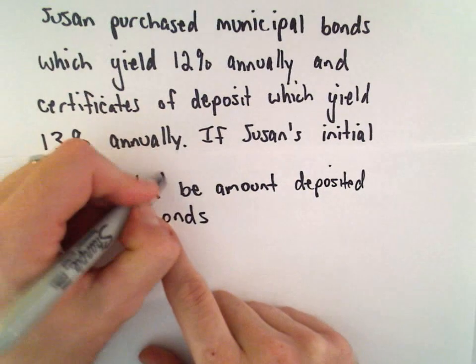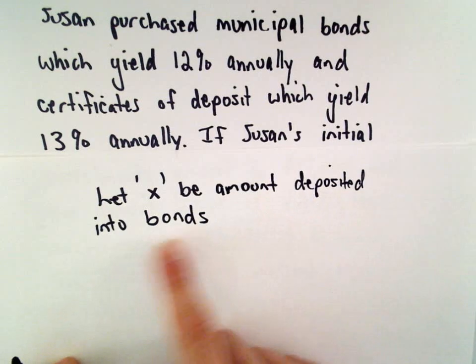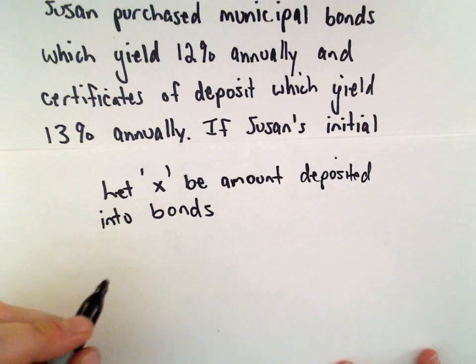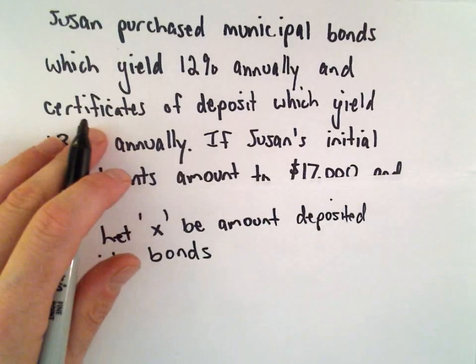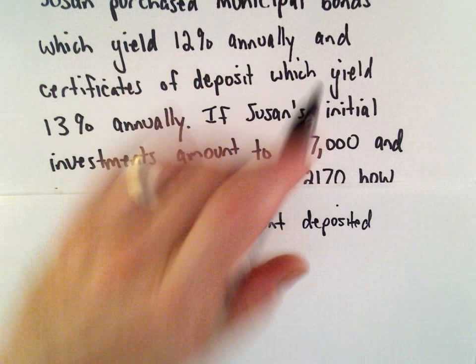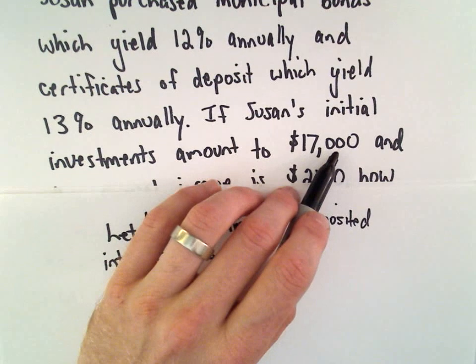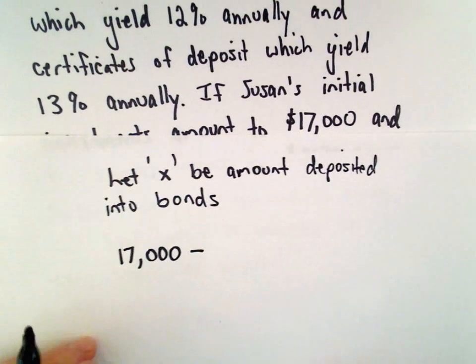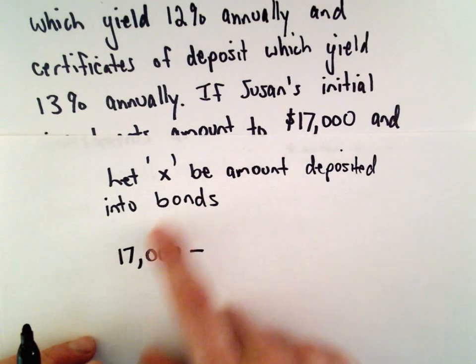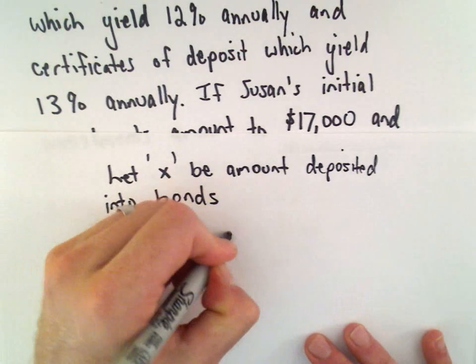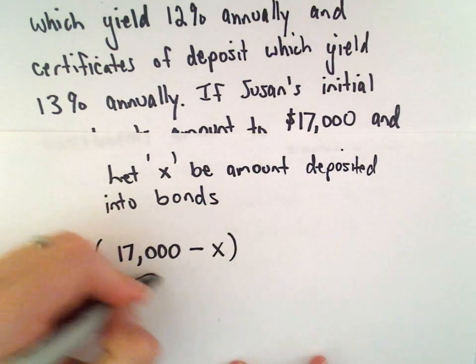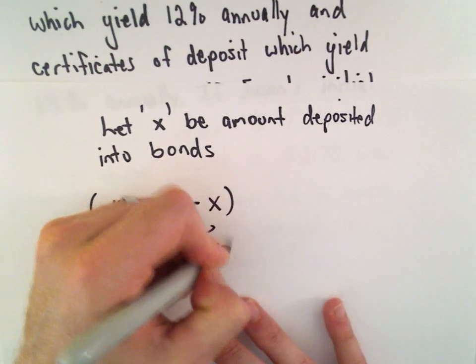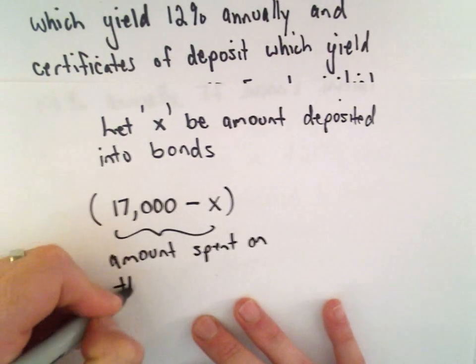If we know that X represents the amount of money that she deposited into the bonds or how much money she spent on the bonds, how much would she have spent on the certificates of deposit? If she spent $17,000 total, we would have to take $17,000 and subtract away however much she spent on the bonds. And that would represent the amount spent on the certificates.